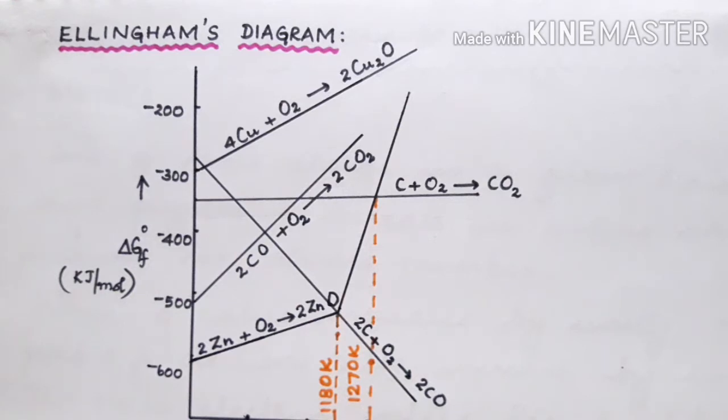On examining the Ellingham's diagram for zinc and carbon, one is able to understand that zinc oxide has a value around negative 600 kilojoules per mole, whereas that of carbon is around negative 350 kilojoules per mole.